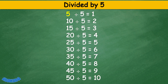Divided by 5: 5 divided by 5 equals 1, 10 divided by 5 equals 2, 15 divided by 5 equals 3, 20 divided by 5 equals 4, 25 divided by 5 equals 5, 30 divided by 5 equals 6, 35 divided by 5 equals 7, 40 divided by 5 equals 8, 45 divided by 5 equals 9, 50 divided by 5 equals 10.